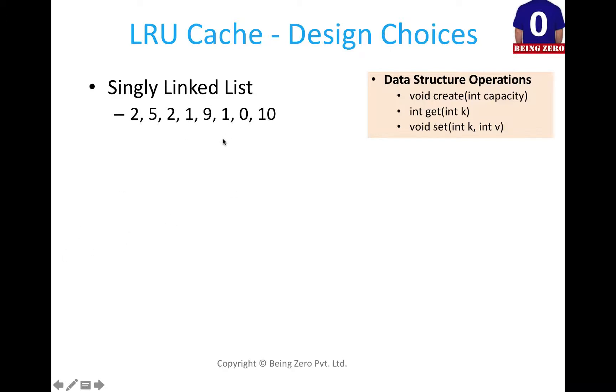The sequence of operations we take is the same as we took in the array. Now what we do is we create a linked list. The first value when it comes is not in the cache because the linked list is empty, so we fetch it from somewhere and store it in the cache.